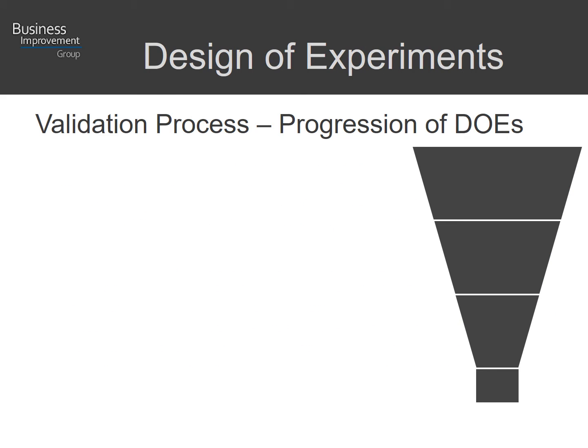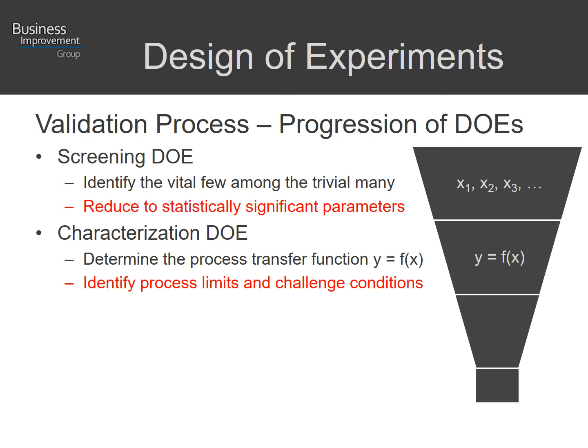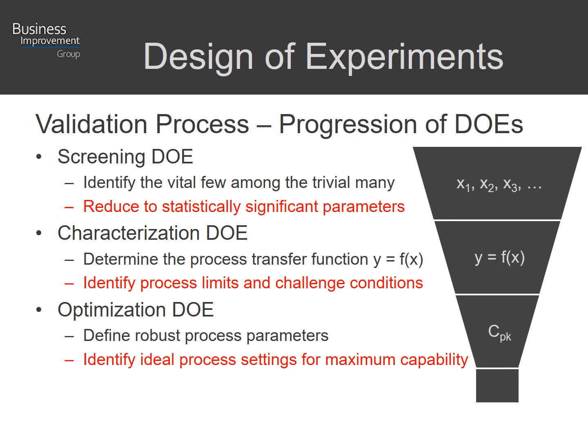Design of experiments lends itself wonderfully to this because it is an extremely useful tool in applied statistics. When used properly in validation, we want to follow a progression of designed experiments. We first start with a screening DOE to identify which input variables are statistically significant. We then run a characterization DOE to determine the mathematical transfer function relating process outputs to inputs, and then optimization to define ideal process settings to maximize capability.